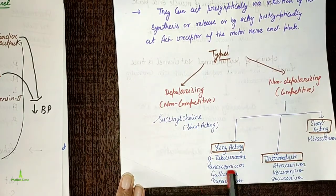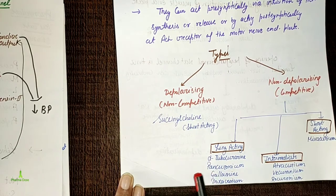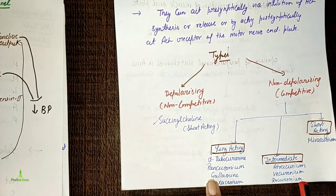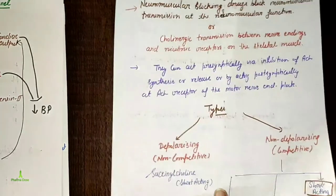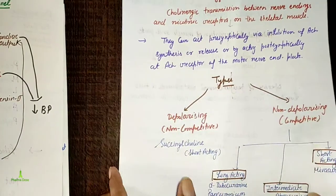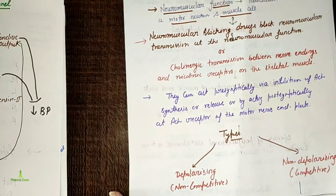Long-acting non-depolarizing competitive drugs include D-tubocurarine and pancuronium. Intermediate-acting drugs include atracurium, vecuronium, and rocuronium. Short-acting non-depolarizing drugs include mivacurium.